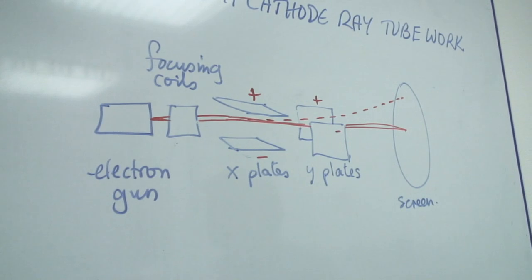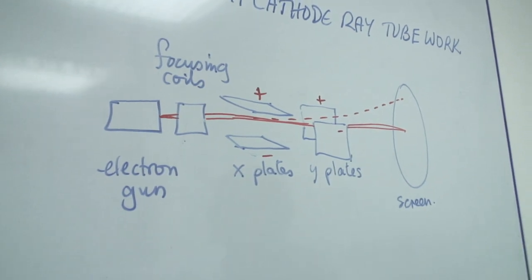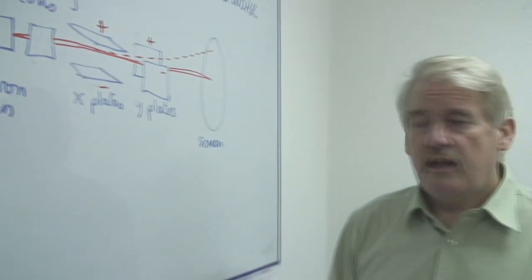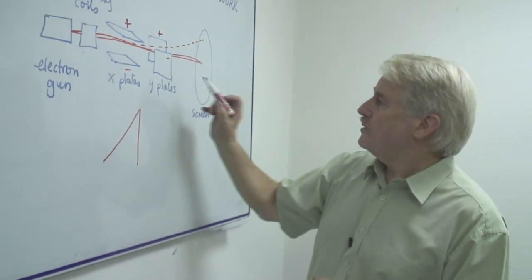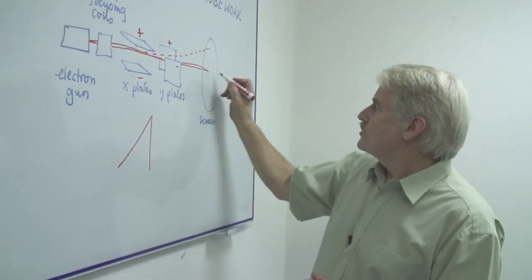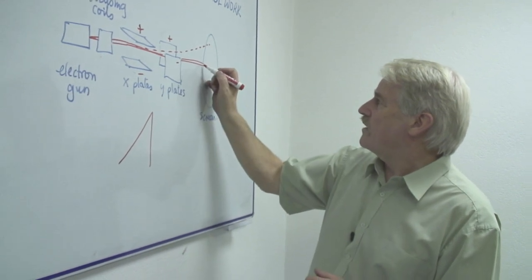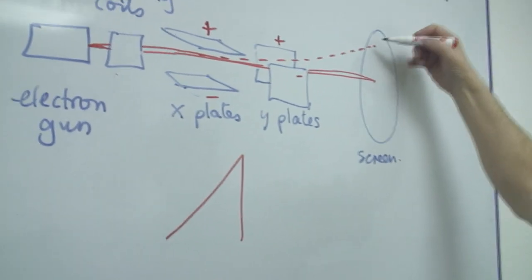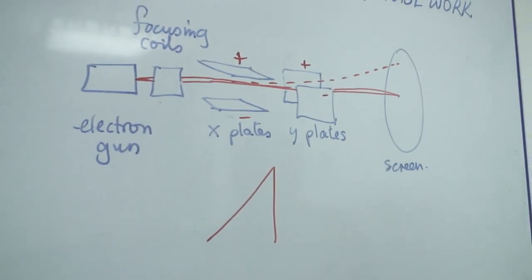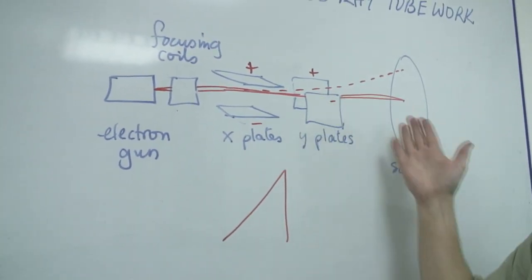Usually the X plates have applied to them a certain voltage and that's often called a sawtooth and it makes the beam go from left to right and fly back very quickly. So it looks as though it's actually going across and then it will scan the whole of that screen with the information that you want.